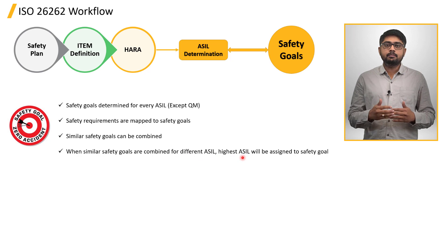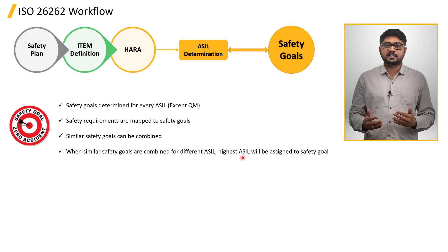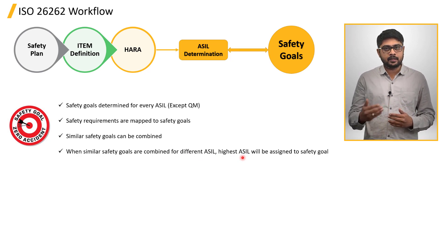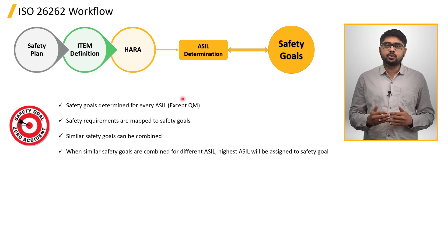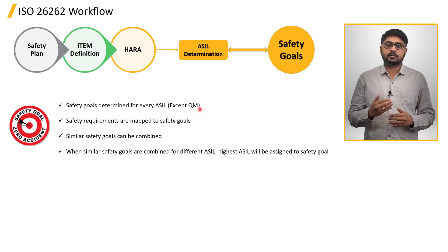A safety goal must be determined for all ASIL levels A, B, C, and D, but it is not necessary for ASIL levels QM and none.